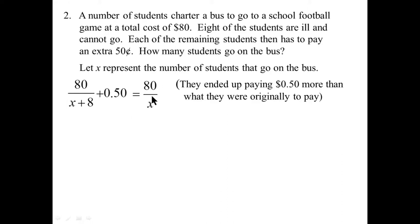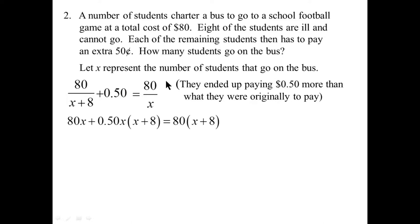That's the hard part of this word problem. The rest of it is: let's multiply through by the common denominator, x times (x plus 8). So everything multiplied by x times (x plus 8). For the first term, the (x plus 8) cancels and we have 80 times x. For the middle term we have this expression. And for the last term, the x's cancel and we have 80 times (x plus 8).